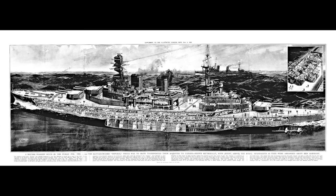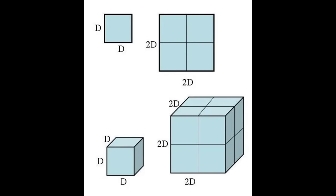Because of the square-cube law, a larger vessel is more efficient when it comes to volume but also more expensive, creating an eternal battle between shipbuilders pushing for the biggest, most efficient ship and the treasury that has to pay for it, which is rather less keen on spending fantastic amounts on a single vessel.